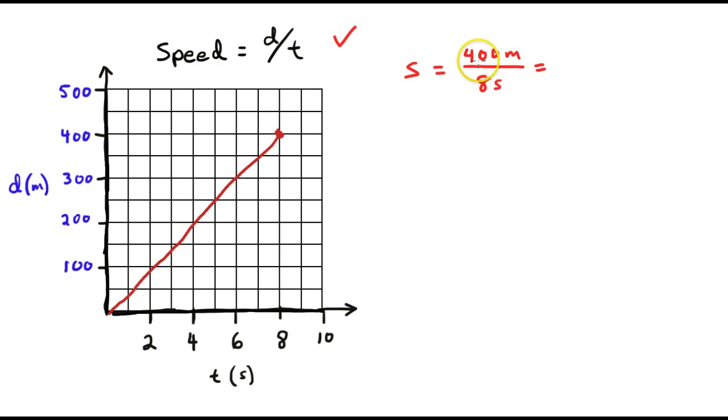400 divided by 8 is going to be 50. And the units stay the same. That's 50 meters for every second. And that would be the speed of whatever this object is.